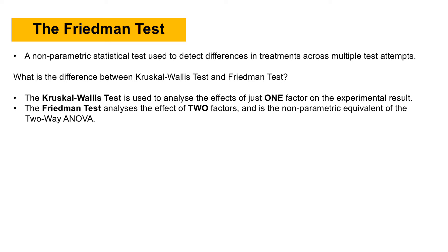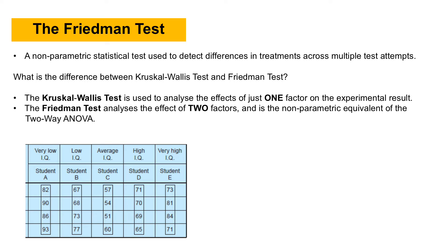So what is meant by one factor and two factors? This can be illustrated by an example of data here. Suppose we have this kind of data and you can see that there are five treatments or five samples whereby the samples are differentiated by different types of students from very low IQ to very high IQ. This type of data only has one factor whereby the factor is concerned with the types or level of IQ of the students.